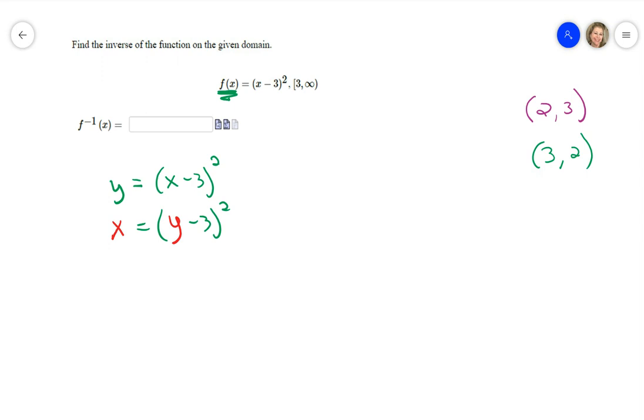And then you solve for Y again. Now Y is inside the parentheses and the parentheses are raised to the second power, so the first thing I have to do is get rid of that exponent. The way to get rid of it is to undo it - the opposite of squaring is square rooting, so I'm going to square root both sides.